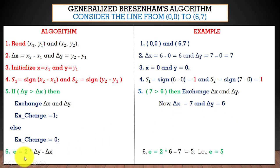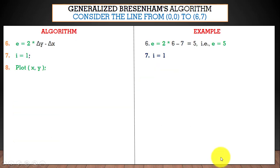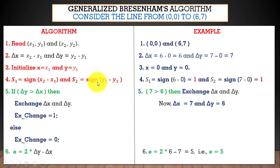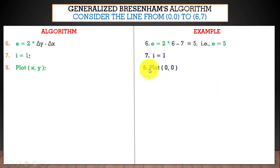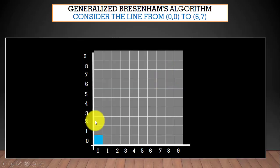Next, calculate the error value e = 2 × delta y − delta x = 2 × 6 − 7 = 5. The initial counter i = 1. Now in the next step we plot the first point (x, y) = (0, 0), which is our starting point.